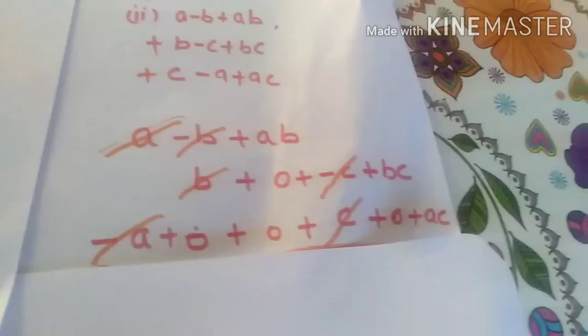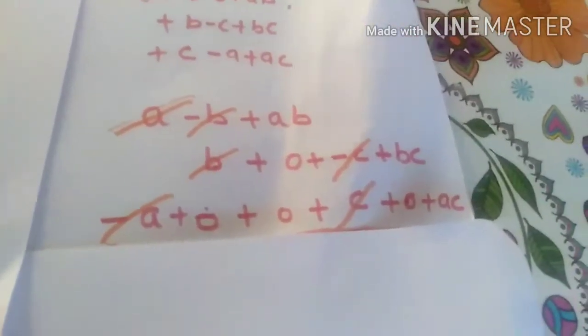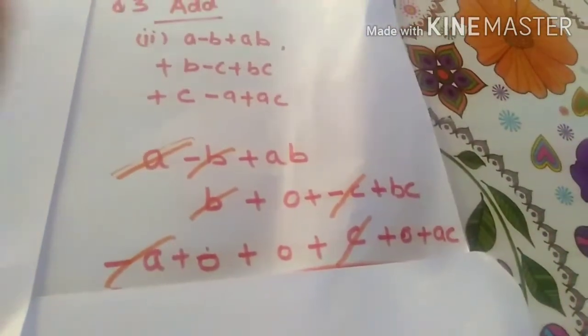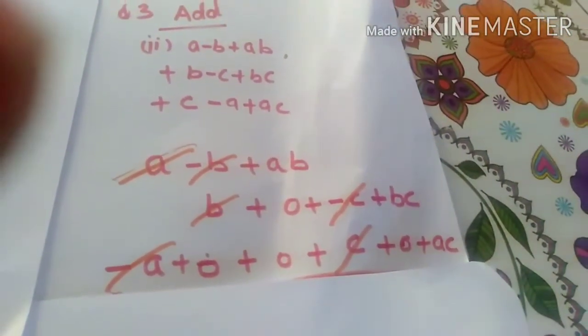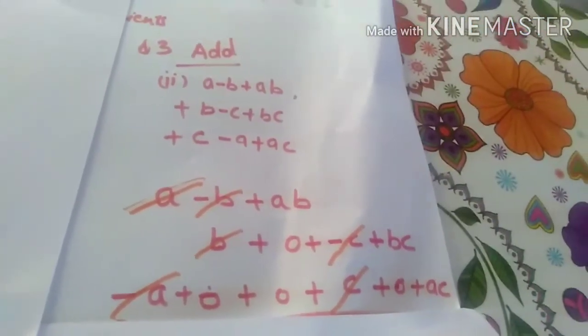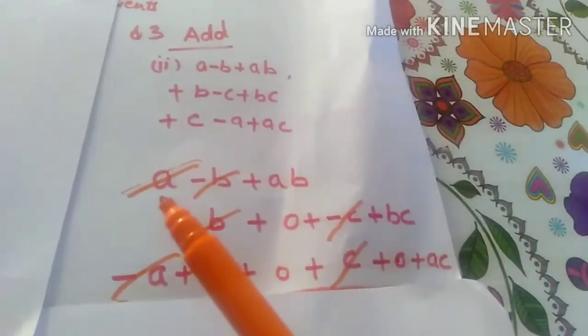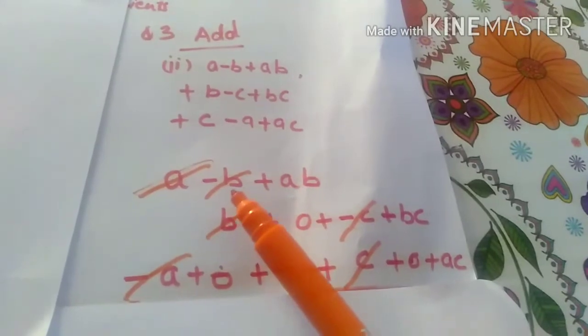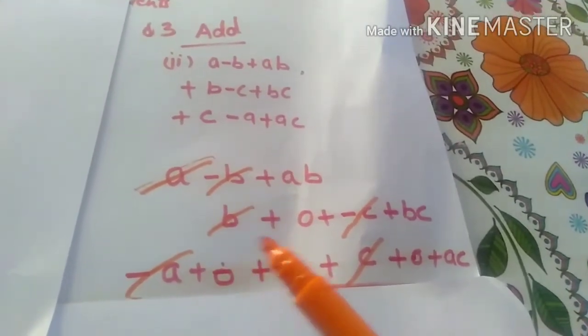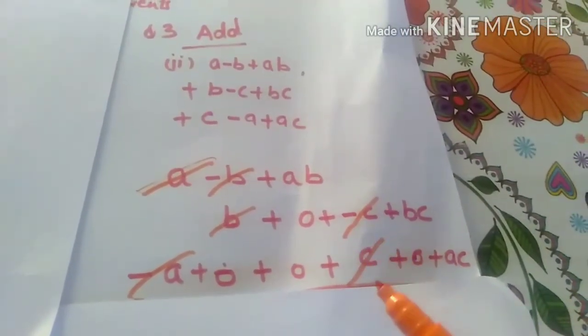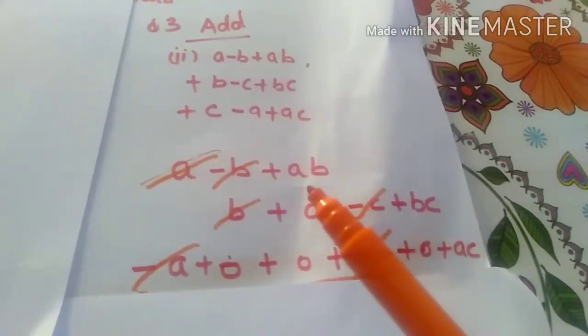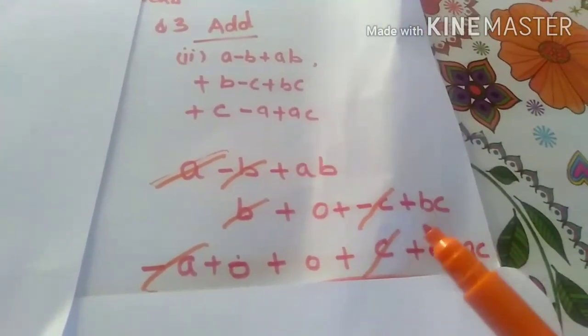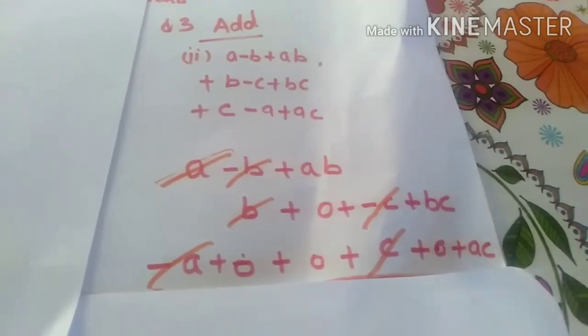So you just can see that A cancels with this minus A. This A cancels with this minus A. Minus B cancels with this B. And minus C cancels with this C. Remaining is AB plus BC plus AC.